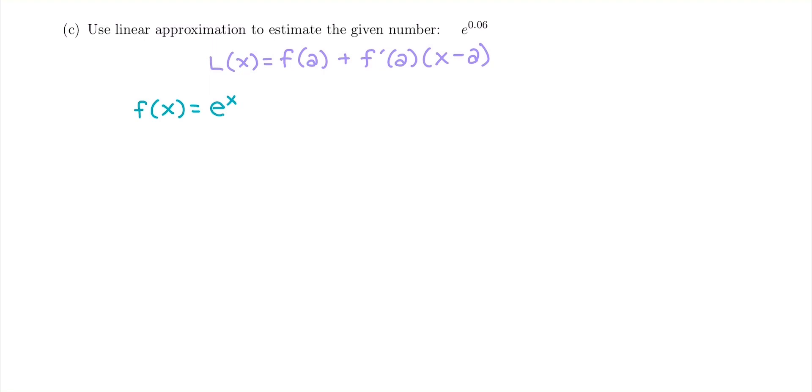It's not given to us very nicely, and we're also not told what value will help us approximate that. So we need to figure out a value that we could do in our head, which would be a equals 0. e to the 0 is 1 because any base to the power 0 is always 1. And 0 is also very close to 0.06. So we picked a value that is near what we're trying to approximate that we can do without a calculator.